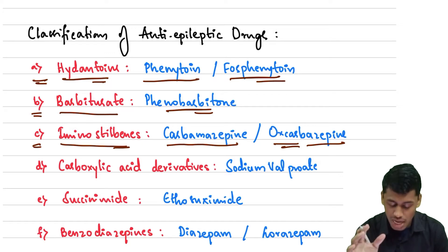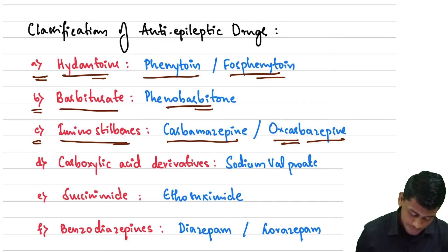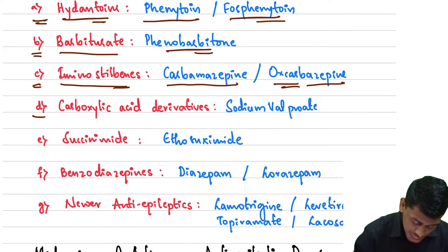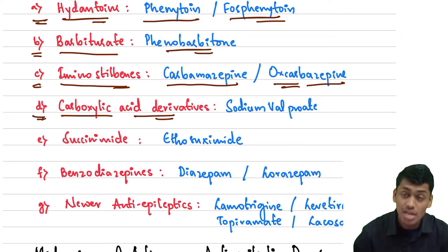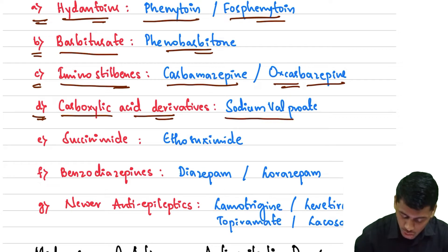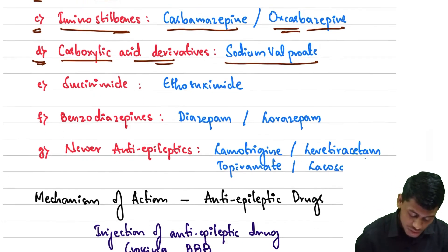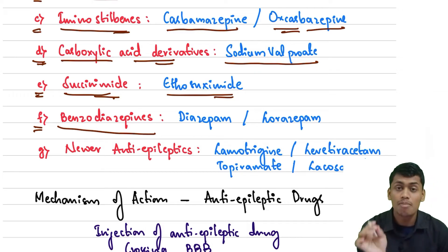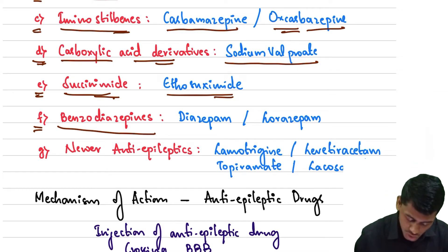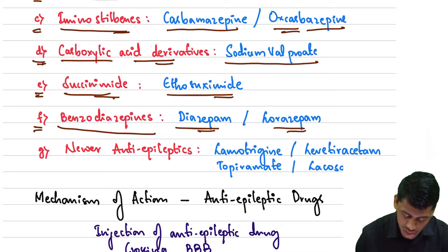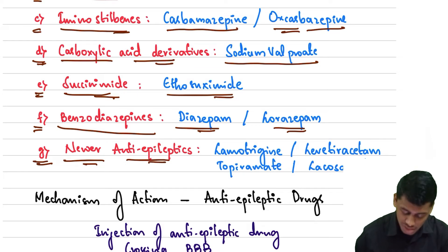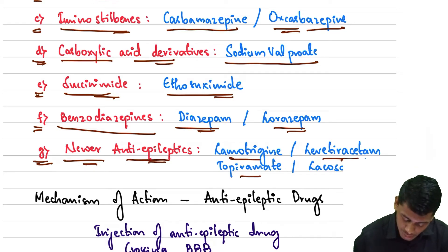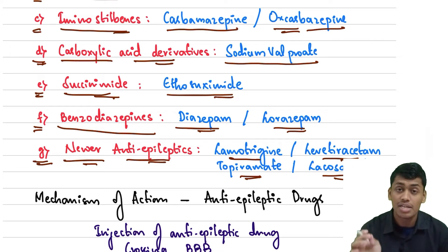The fourth group is the carboxylic acid derivatives, and the important drug in this group is sodium valproate. The fifth group is the succinimides, which includes ethosuximide. The sixth group is the benzodiazepines, which includes diazepam and lorazepam. Finally, the newer anti-epileptic drugs include lamotrigine, levetiracetam, topiramate, and lacosamide.